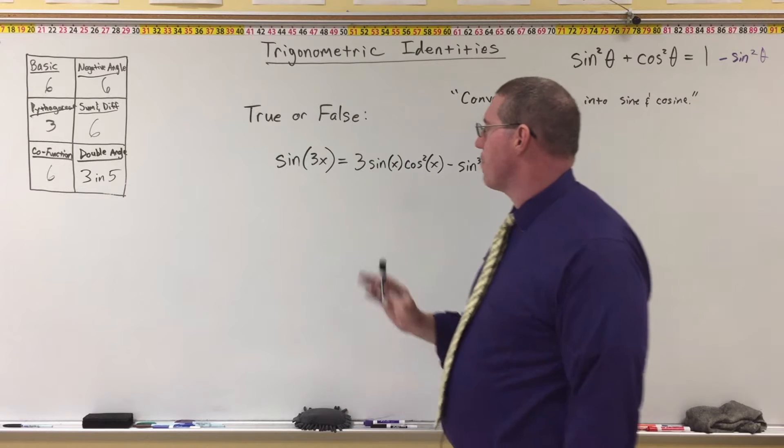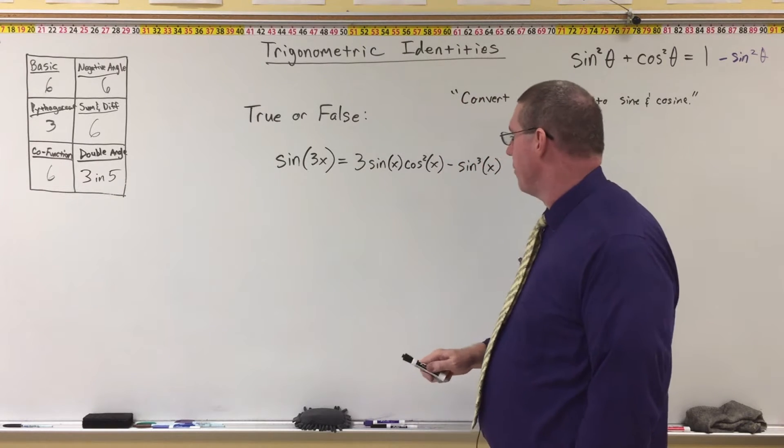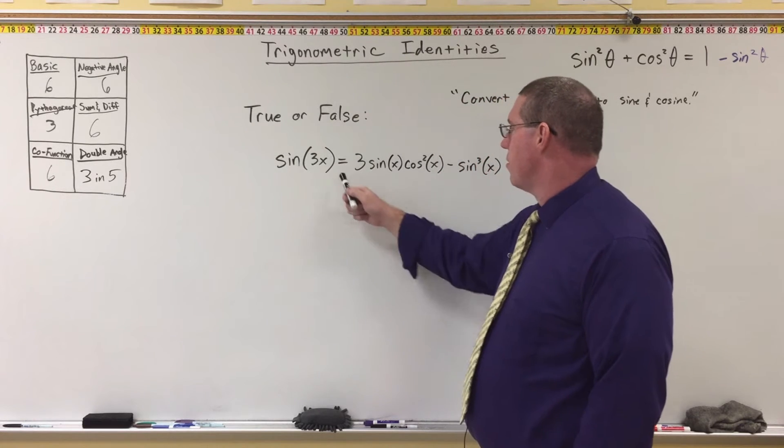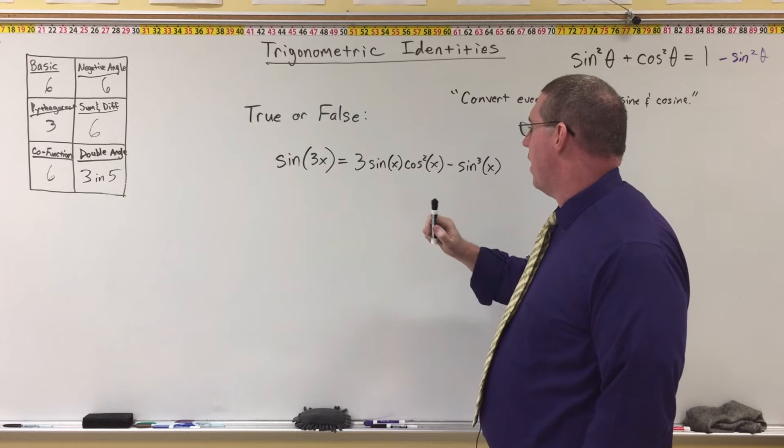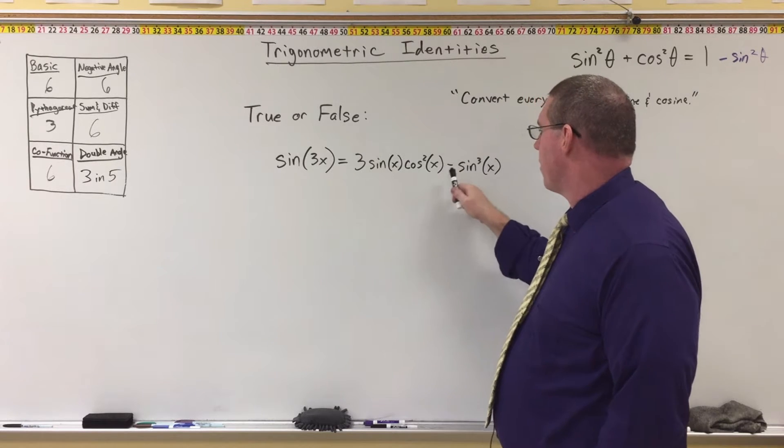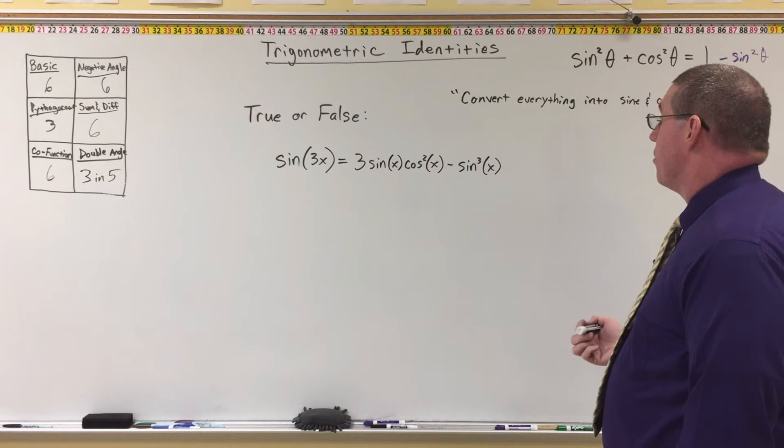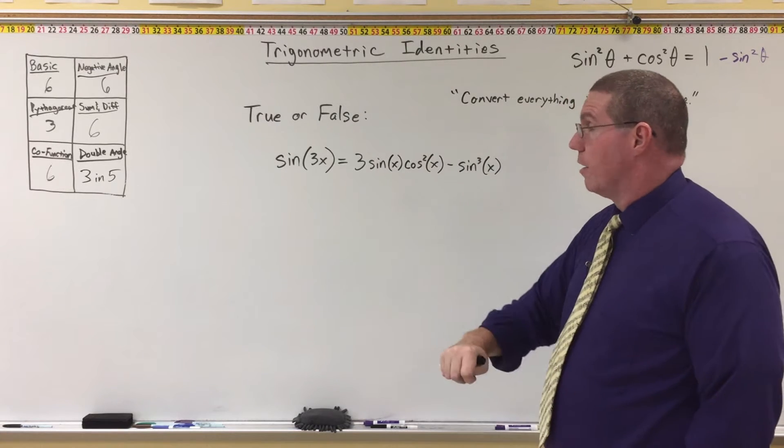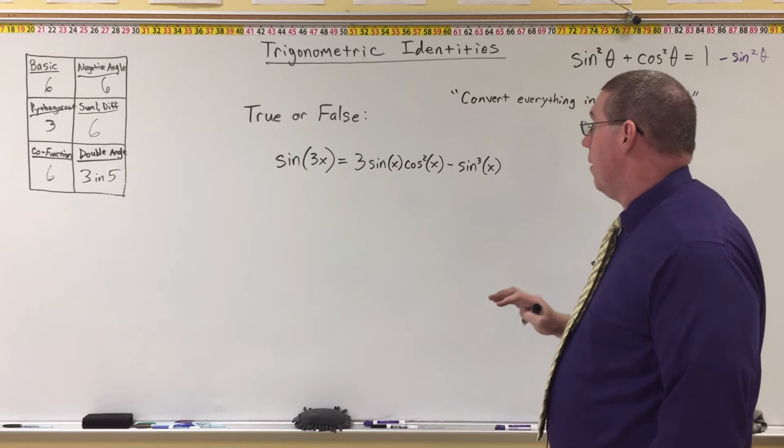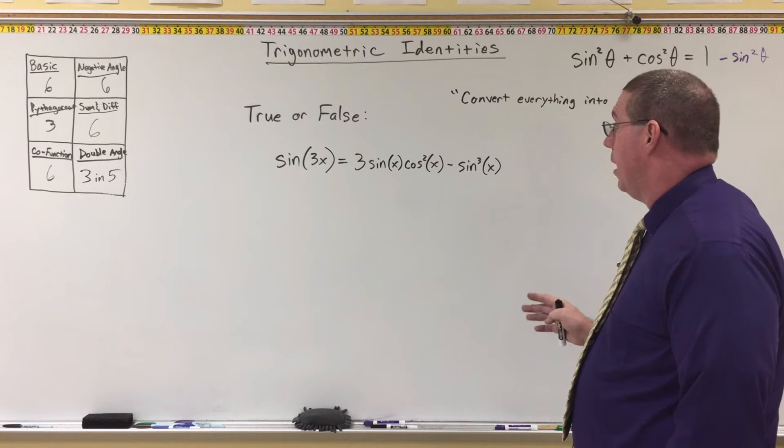But what I have here is, we have something where we don't have a formula for it over there. We have sine of 3x is equal to 3 sine of x times cosine squared of x minus sine cubed of x. Now, there's a lot of things we can do here. First of all, everything's already in sine and cosine, so we're not going to do that.